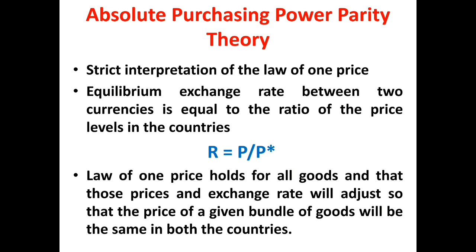For example, if a kilogram of wheat costs one dollar in the United States and five rupees in India, the exchange rate should be five rupees equals one dollar. The law of one price holds for all goods, so prices and exchange rate will adjust so that the price of a given bundle of goods will be the same in both countries.